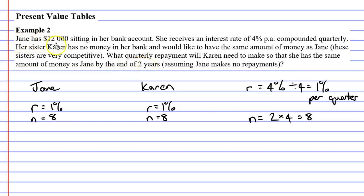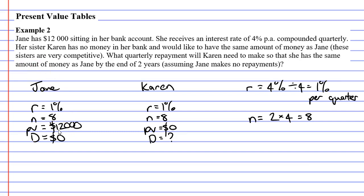Jane starts with a large sum of money sitting in her bank account — that's referred to as the present value. So Jane has a present value of $12,000, whereas Karen doesn't have a present value; she doesn't start with any money in her bank account. Instead, she's going to make repayments. We don't know what these repayments are, so we'll put a question mark. Jane makes no repayments, so for Jane, repayments D are $0.